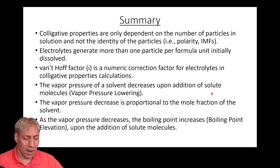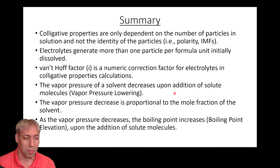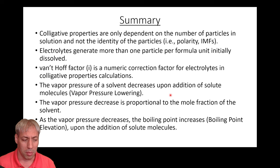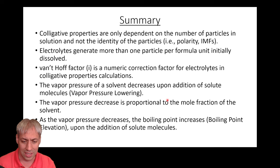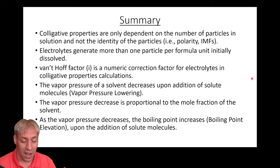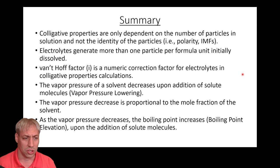That closes out part one of colligative properties. To summarize: colligative properties are dependent on the number of particles in solution. Electrolytes versus non-electrolytes change that number of particles, and you account for that using the Van't Hoff factor. The vapor pressure of the solvent decreases as you add solute molecules — that's vapor pressure lowering. That vapor pressure dictates the boiling point, so you need more heat as you add solute, raising the boiling point — that's boiling point elevation. In the next video, we'll talk about freezing point depression and osmotic pressure.